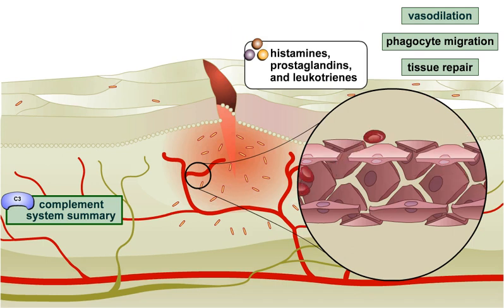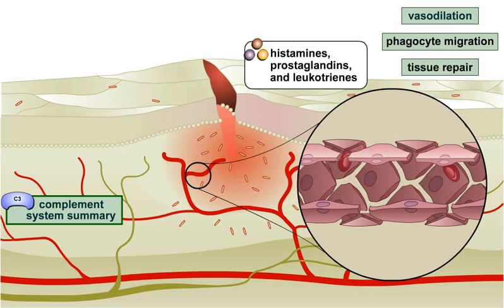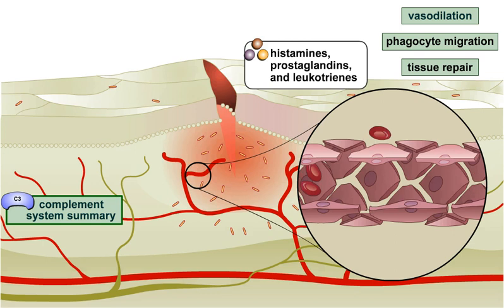Vasodilation results in more blood, and therefore more phagocytes, oxygen, and nutrients, being delivered to the site of injury. This increased blood flow results in redness, heat, swelling, and some of the pain associated with inflammation.